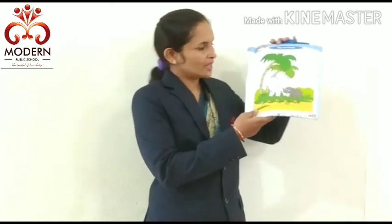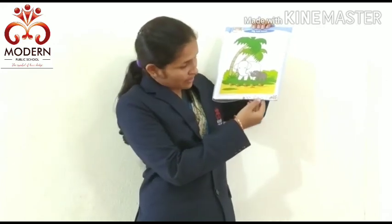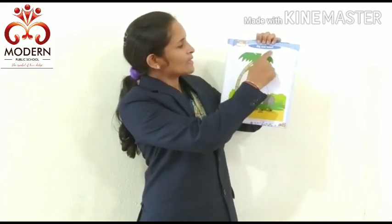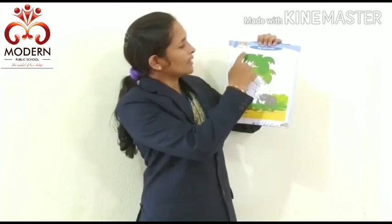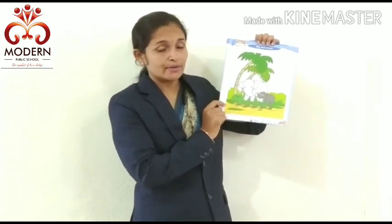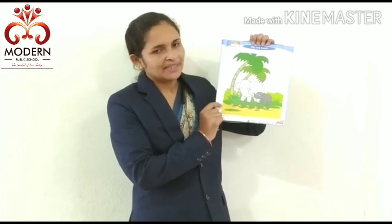So dear students, you understand the concept of math — big and small. Now homework time. Look here students, page number 11: big and small. Color the big elephant, and point to the small ants. That is your homework. Complete it, take photos, and send on the group. Bye-bye. Thank you.